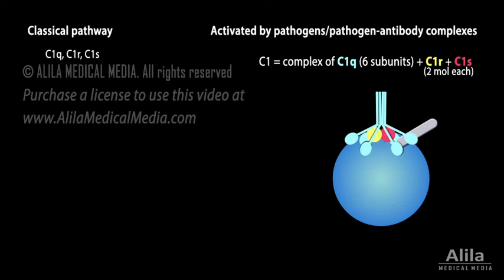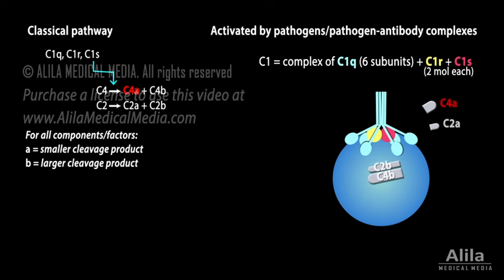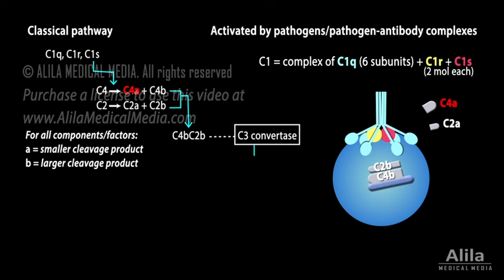C1S in turn cleaves C4 and C2 into larger and smaller fragments. The larger fragments combine to form the C4B-C2B complex, which is a C3 convertase. C3 convertase cleaves C3 into C3A and C3B. This step is where all three pathways converge. Note that C3 convertase and C3B remain bound to the pathogen surface; only the smaller cleavage products are released back to the plasma.